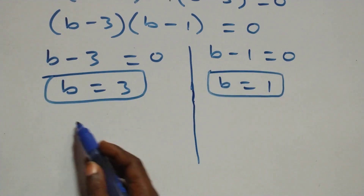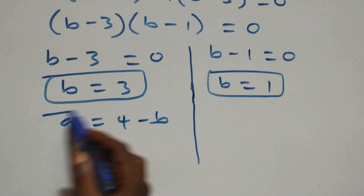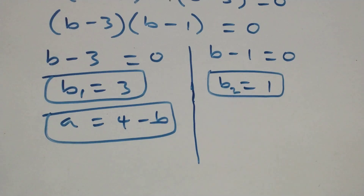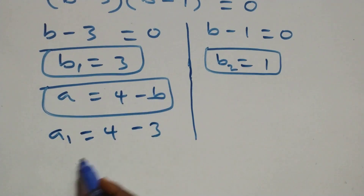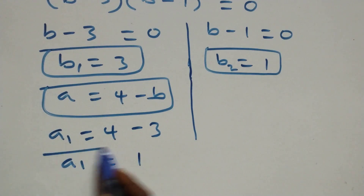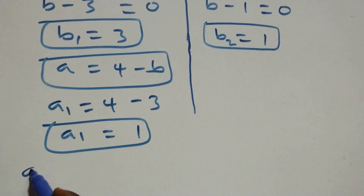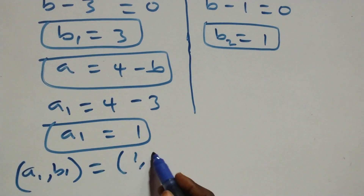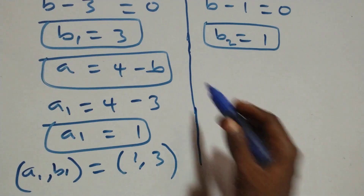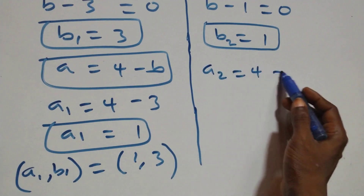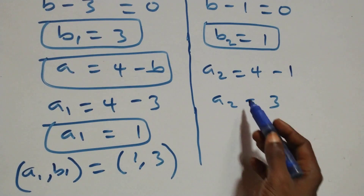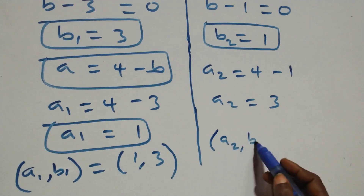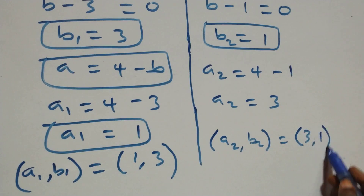Using equation 4, a equals 4 minus b. Calling b₁ = 3 and b₂ = 1: a₁ equals 4 minus 3, so a₁ equals 1, giving the first solution (a₁, b₁) = (1, 3). And a₂ equals 4 minus 1, so a₂ equals 3, giving the second solution (a₂, b₂) = (3, 1).